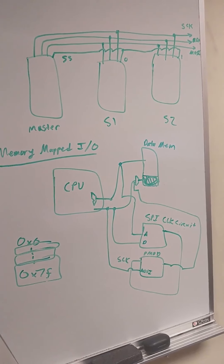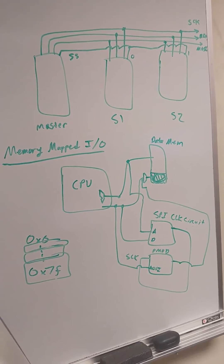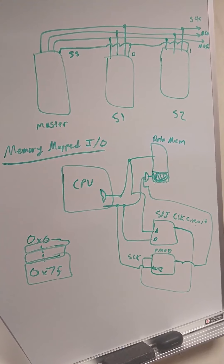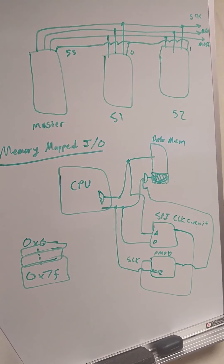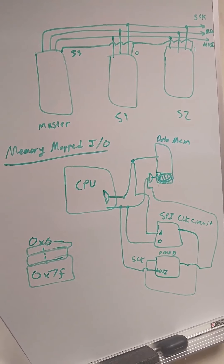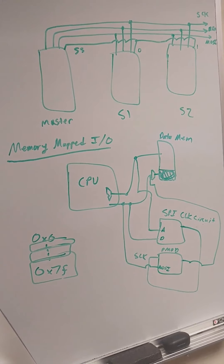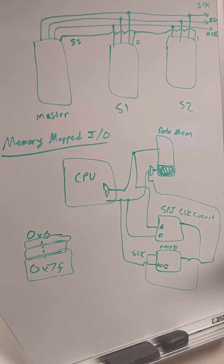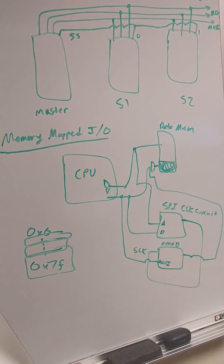Traditionally, in the past, CPUs had a separate instruction set just for I/O. That's more old school. Nowadays, more embedded systems use memory mapping.